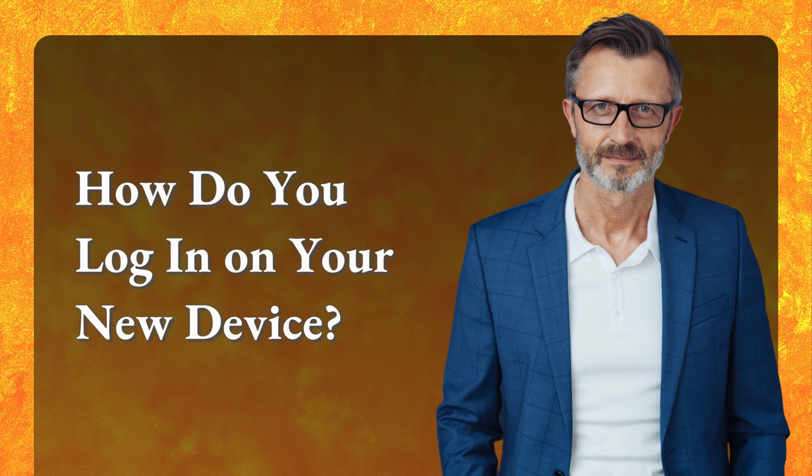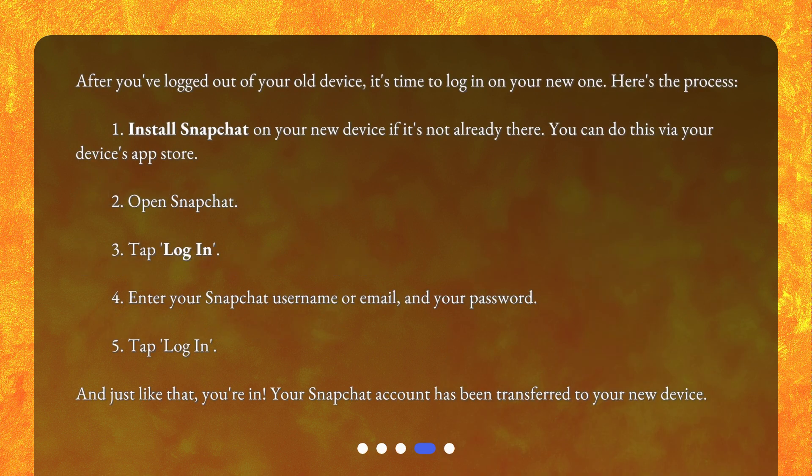How do you log in on your new device? After you've logged out of your old device, it's time to log in on your new one. Here's the process: 1. Install Snapchat on your new device if it's not already there — you can do this via your device's app store. 2. Open Snapchat. 3. Tap Log In. 4. Enter your Snapchat username or email and your password. 5. Tap Log In.